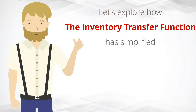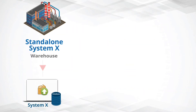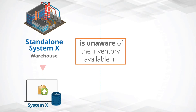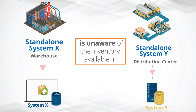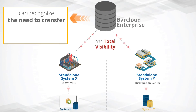Let's explore how the inventory transfer function has simplified the inventory transfer process. Standalone X is unaware of the inventory available in Standalone Y, but the enterprise has total visibility and can recognize the need to transfer required inventory from X to Y.